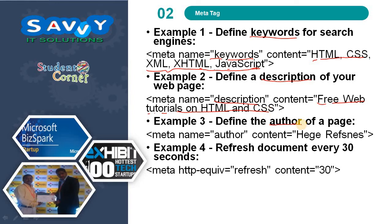For defining other meta information, the meta name is other and we need to write the name of the other attribute. The next one is the refresh document. Here we are specifying 30 seconds of time. This refresh feature is one of the powerful tools in the meta tag.